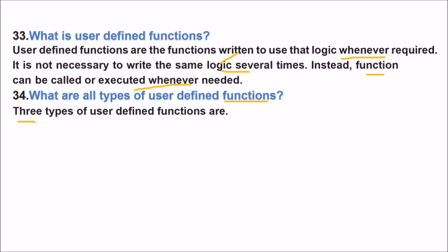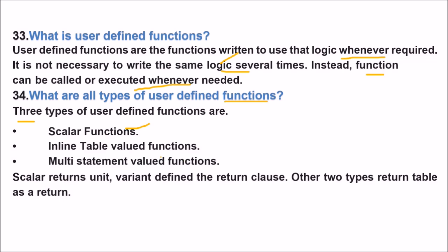What are all types of user-defined functions? So there are three mainly, three categories types of user-defined functions: scalar functions, inline-table-valued functions, multi-statement-valued functions. Scalar returns unit variant defines the return clause. Other two types return table as a return.